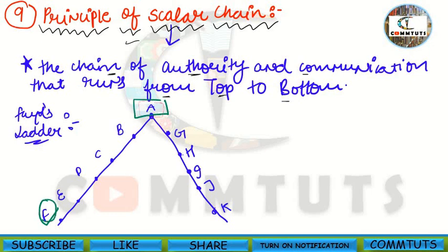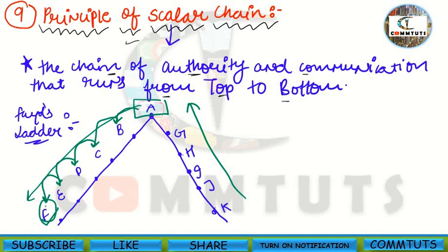For example, if Mr. A needs to communicate with Mr. F, then according to the principle, he would first transfer his message to B, then B to C, C to D, D to E, and finally to F.